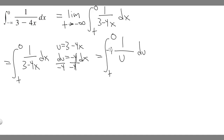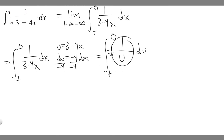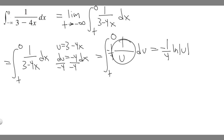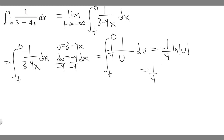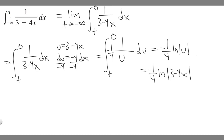I actually made a mistake — this isn't a minus four out front. The reason is because this is du over minus four, so it's really minus one over four. So it's going to be minus one over four times one over u. If we find the anti-derivative, it's going to be minus one over four times the ln of the absolute value of u, because one over u integrates to ln of the absolute value of u. Then we have to replace u with three minus four x, giving us minus one over four times the ln of the absolute value of three minus four x, evaluated from t to zero.